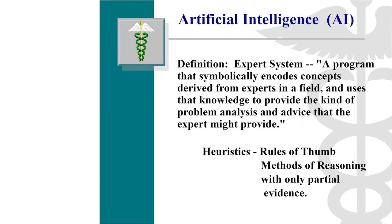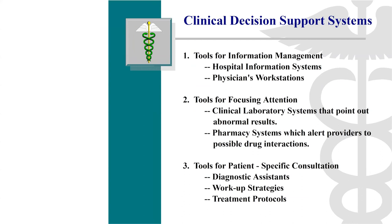The definition of artificial intelligence started out as an expert system — a program that symbolically encoded concepts derived from experts in a field and used that knowledge to provide the kind of problem analysis and advice that an expert might provide. The key is it used heuristics, or rules of thumb, and methods of reasoning with only partial evidence. These were built in three ways: tools for information management, tools for focusing attention like abnormal lab results and pharmacy drug-drug interactions, and tools for patient-specific consultation, which is often what we think of when we think of artificial intelligence.